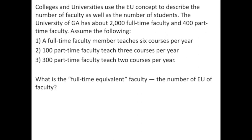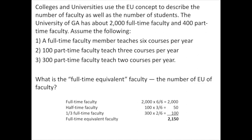Think about this for a second — push pause and see if you can come up with a full-time equivalent faculty number. Full-time faculty teach six out of six courses, so 2,000 are actual full-time faculty. In group two, 100 part-time faculty teach three courses per year, which is exactly half of six, so those 100 equate to 50 full-time faculty. In group three, those 300 who teach two courses per year equate to 100 full-time faculty. So our full-time equivalent faculty out of 2,400 total faculty is 2,150 people.